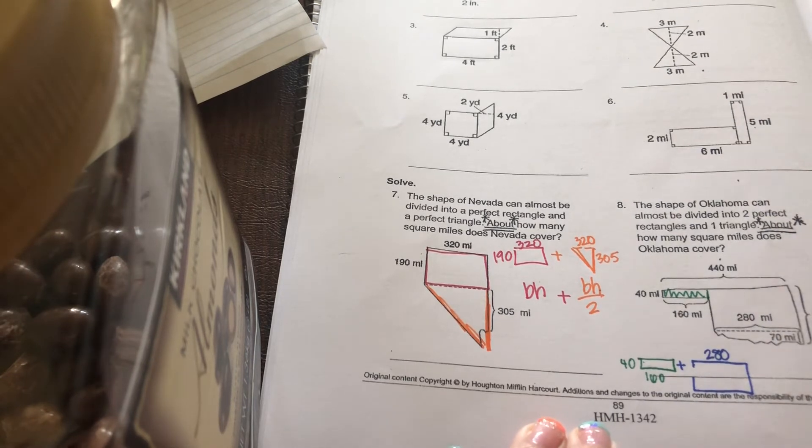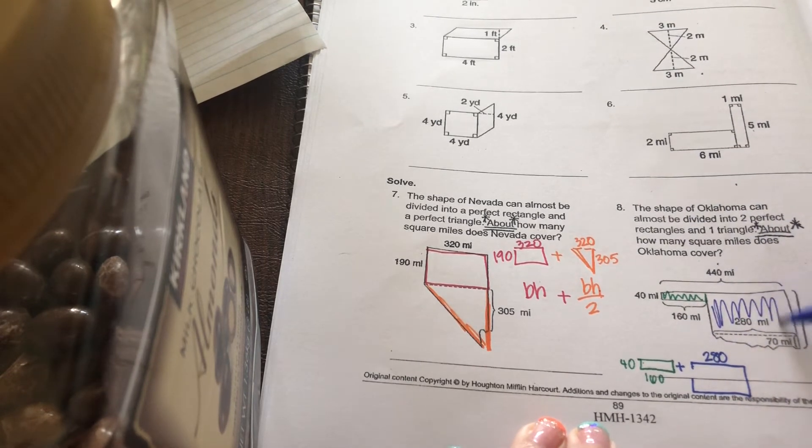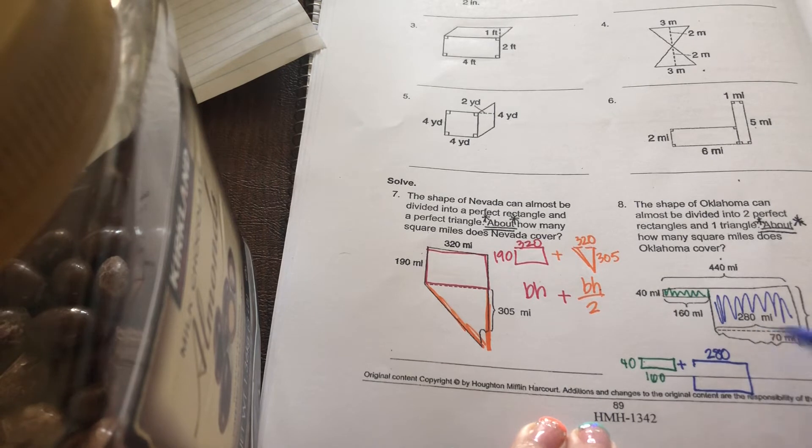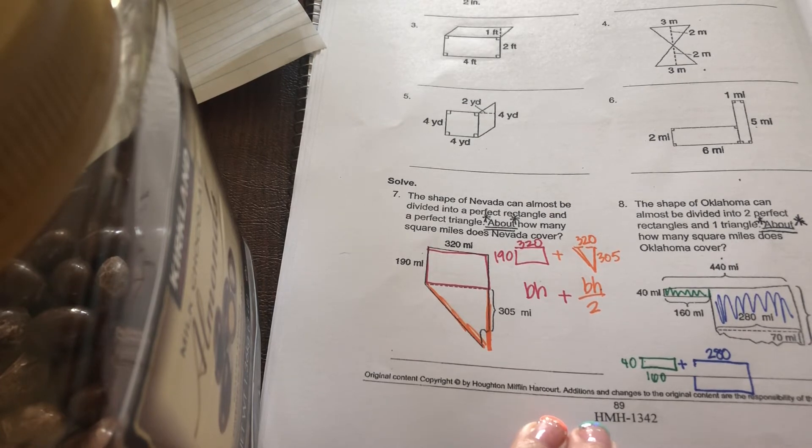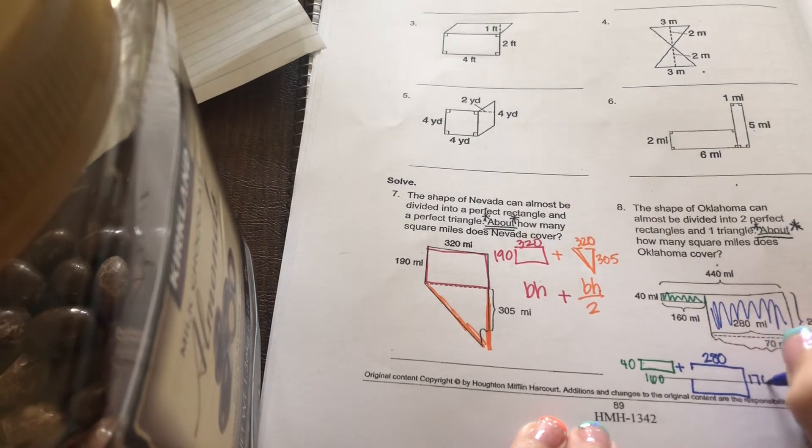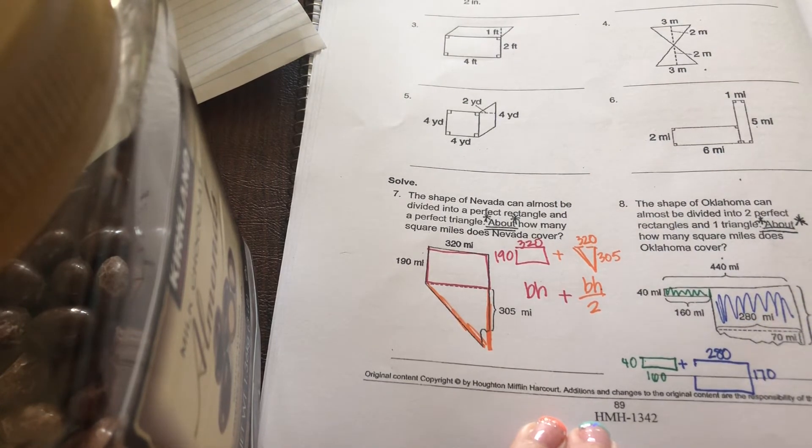Because again, I'm just finding the area of this rectangle right here. I knew the base was 280, but my height, it tells me this whole side is 240, but it does tell me from here to here 70. So 70 plus what equals 240? Go ahead and plug that into your calculator. 240 minus 70 is what? Type that in. And you get 170. So this rectangle is 280 by 170.